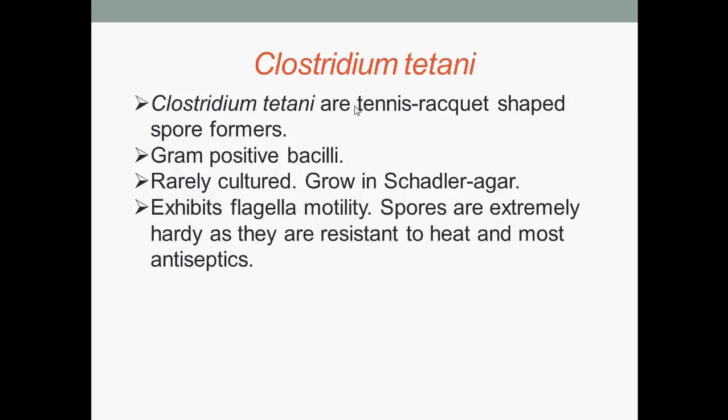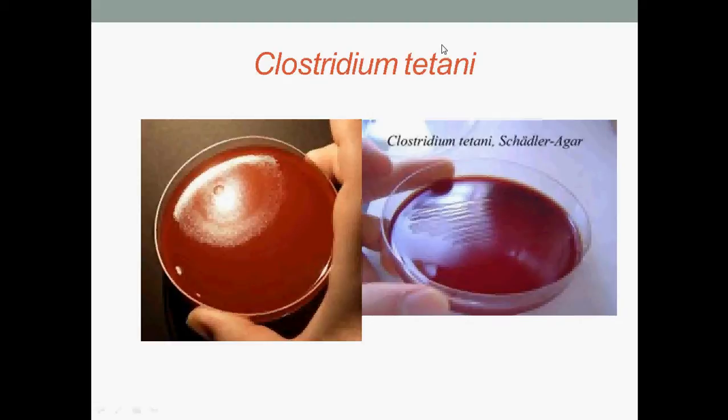Clostridium tetani exhibit flagellar motility, and their spores are extremely hardy as they are resistant to heat and most antiseptics. Here we have colonies of Clostridium tetani growing on Schaedler agar. Schaedler agar has superior nutritive properties and a low oxidation-reduction potential. Redox is a measure of the tendency of a chemical species to acquire electrons and thereby be reduced. Schaedler agar can support the growth of anaerobes from the intestinal and digestive tracts and other organ sites without interference from the accompanying aerobic flora.